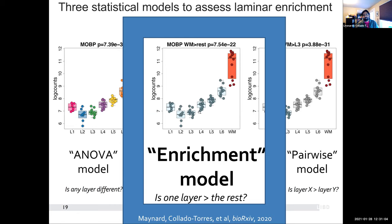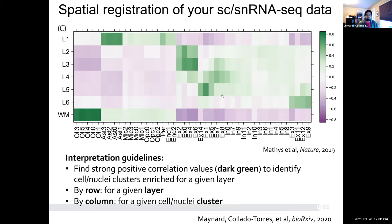If you compress your data using the pseudo-bulking approach, now that we have tools for bulk approaches, what we need is to use the enrichment model to find genes that have higher expression in a given layer — or in the case of single nucleus RNA-seq, in a given cluster — compared to the rest. We run this model on both, and that will give you T-statistics for both the spatial data and the single nucleus RNA-seq data.